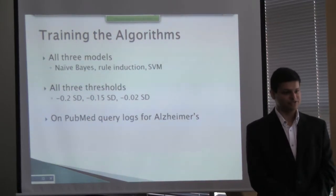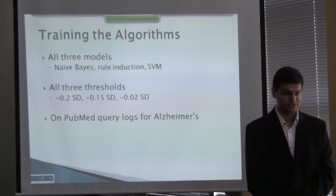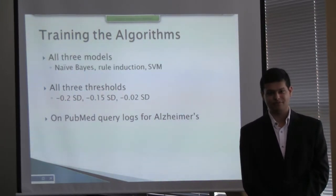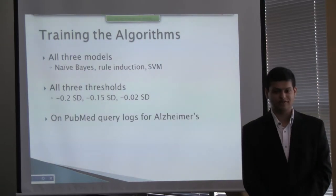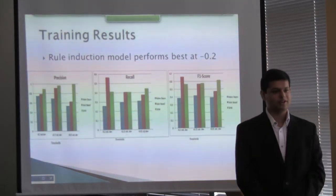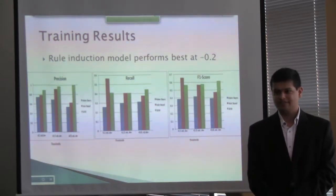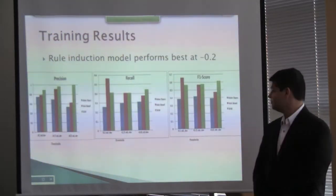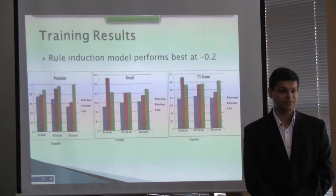Three algorithms are trained: Naive Bayes, Rule Induction, and SVM, each tested on three different thresholds: negative 0.2, negative 0.15, and negative 0.02 standard deviation and above from the mean, with PubMed query logs for Alzheimer's as training data. Rule induction worked best when classes were more balanced. SVM showed more promise but had very low recall overall. The best F1 score was observed with rule induction when classes were balanced.